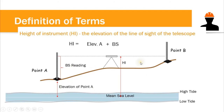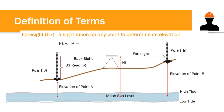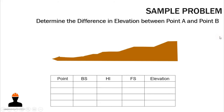After computing the HI, we take a foresight reading. The foresight is a reading taken to any point whose elevation we want to determine. Since we do not yet know the elevation of point B, we turn the telescope to the other side, place the stadia rod at point B, and take the foresight reading. The elevation of point B equals the HI minus the foresight reading.